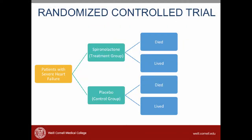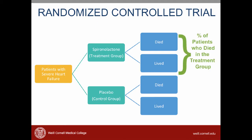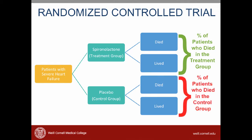Let's go back to our study design and think about the outcome. Patients with advanced heart failure were randomized to receive spironolactone or placebo, and in each of the groups, death from any cause was measured. So what kind of variable is death? Death is a dichotomous variable — patients either die or they don't. When we look at the results of an article with a dichotomous outcome, we compare the percentage of patients who died in the treatment group versus the percentage who died in the control group, using statistical testing to see if those percentages are significantly different.